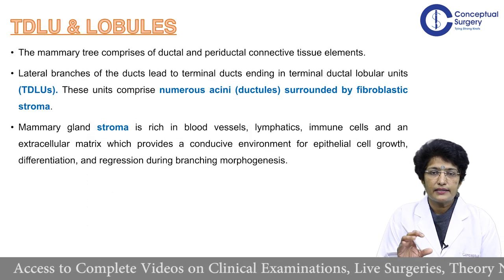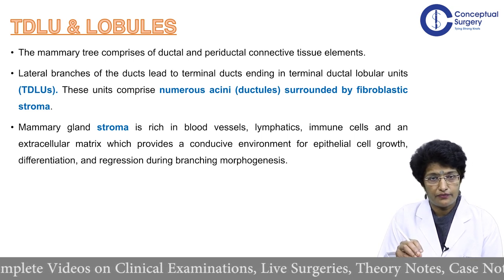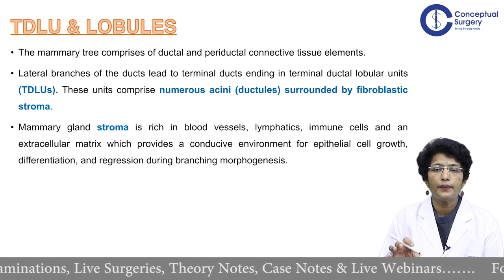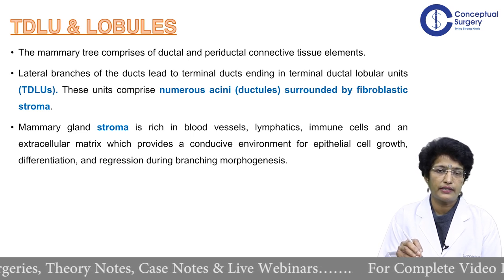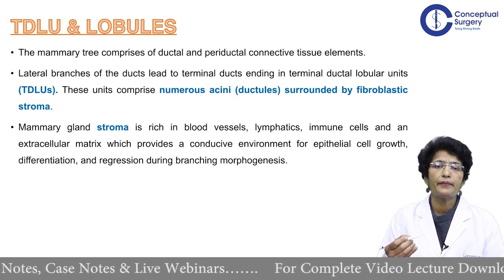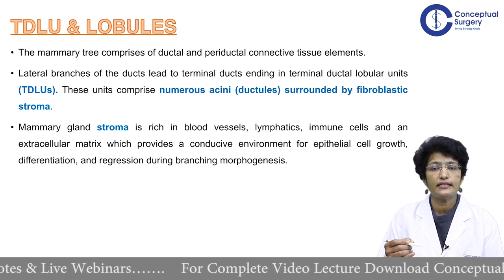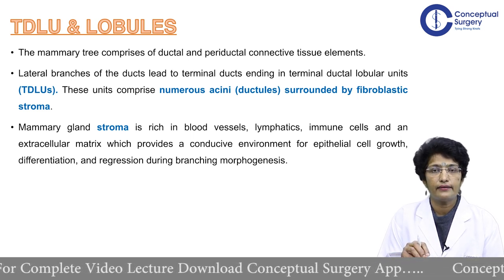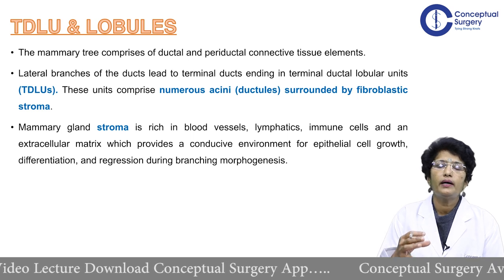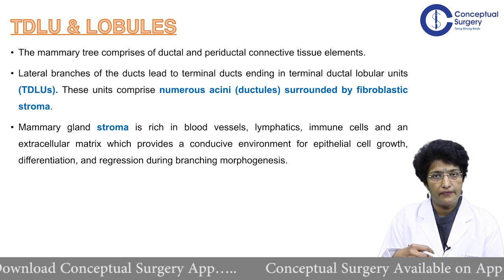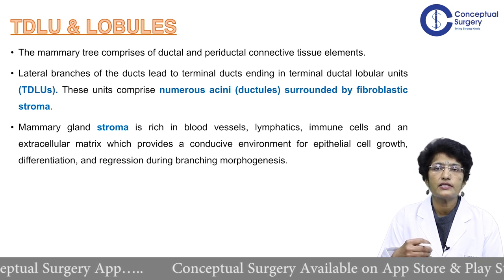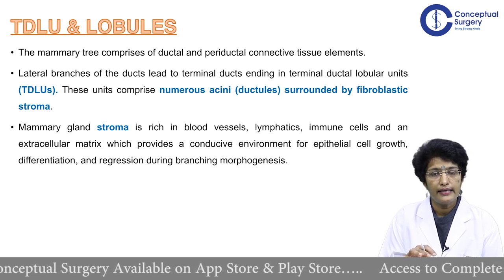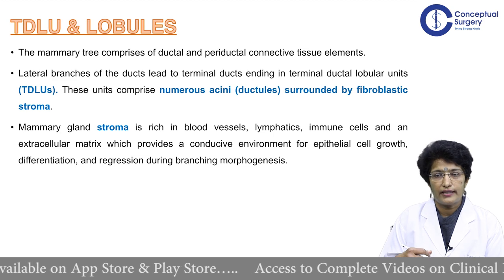The mammary tree consists of ductal and periductal connective tissue elements — that is largely the structure. The lateral branches of the ducts lead to terminal ducts and end in terminal duct lobular units, or TDLUs. These units comprise numerous acini surrounded by fibroblastic stroma. The stroma is very rich in blood vessels, lymphatics, immune cells, and an extracellular matrix, which provides a very conducive environment for epithelial cell growth, differentiation, and regression during morphogenesis.